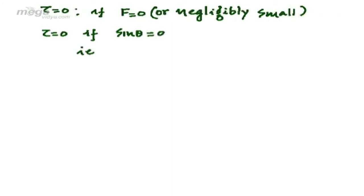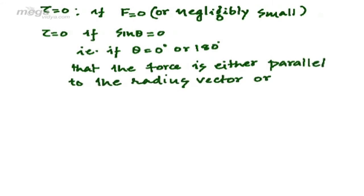That is, if θ is equal to either zero degrees or 180 degrees, which means that the force is either parallel to the radius vector or it is anti-parallel to the radius vector.